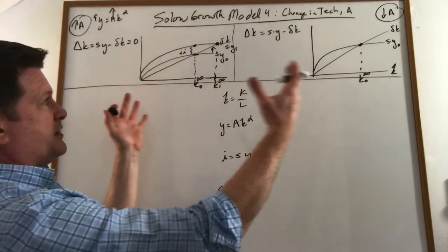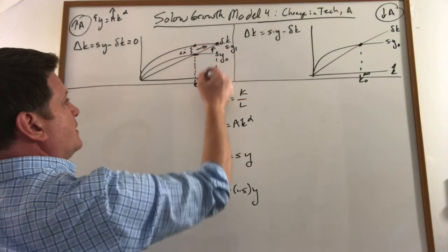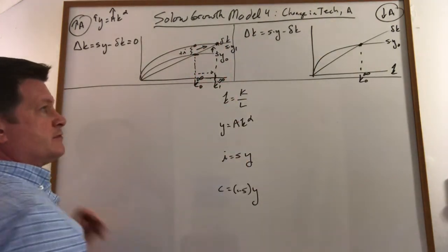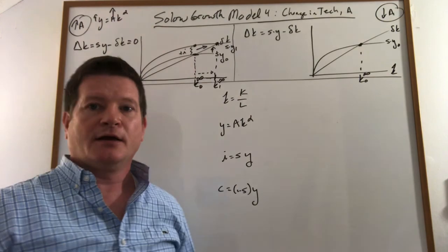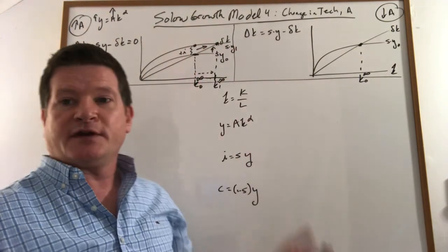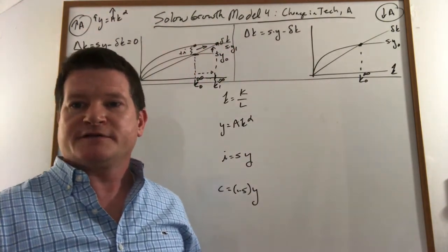So our capital stock begins to grow. That happens until we move slowly over to the new level of capital stock, and our extra investment gets eaten up in offsetting depreciation.